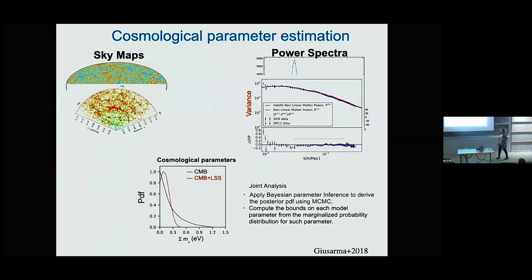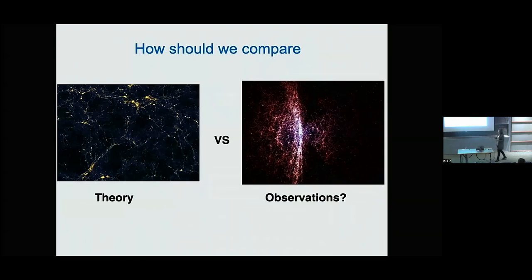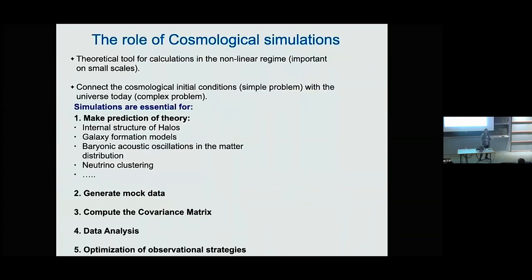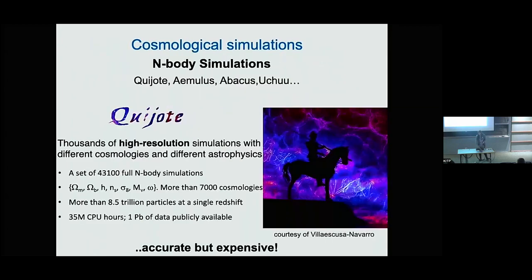Unfortunately, we still have some problems because we don't have a precise theory for what happens at non-linear or small scales. The important question is: how should we compare theory versus observation, and how can we extract the maximum amount of information from data if we don't have a precise theory at non-linear scales? A way to do that is by using numerical simulations — astrophysical and cosmological simulations in general.